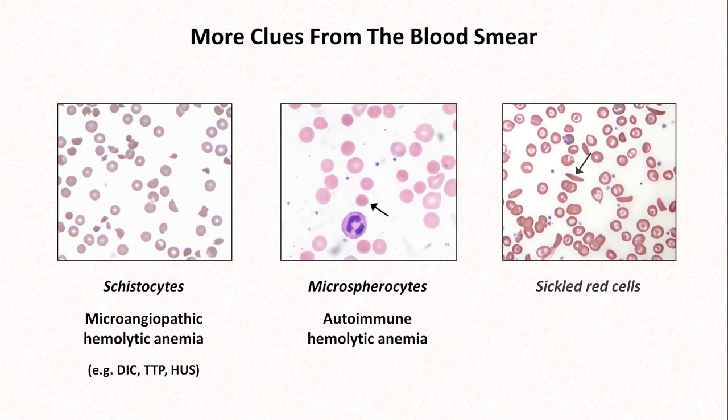And here are sickled red cells seen in sickle cell disease. This slide also has many so-called target cells, in which extra membrane relative to cytoplasm results in a central protrusion in the biconcave disc, looking like a red dot in the middle of the central pallor. This is seen in sickle cell disease as we see here, but also in a number of other disorders such as thalassemia, so the presence of target cells is not quite as diagnostically helpful.